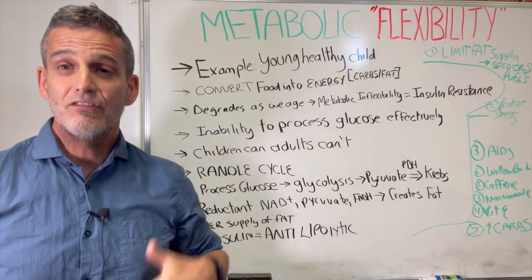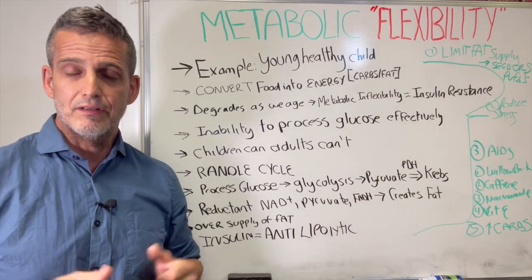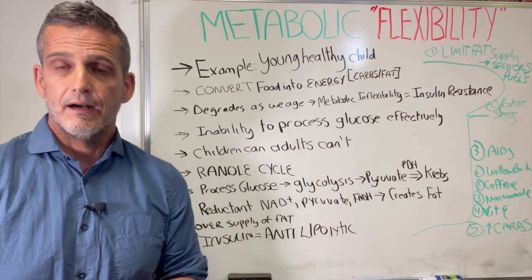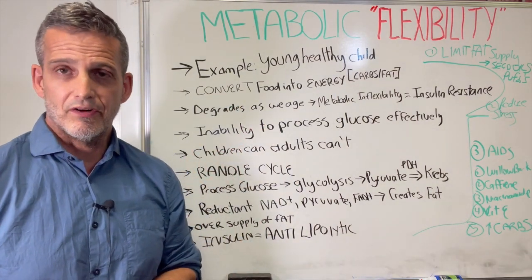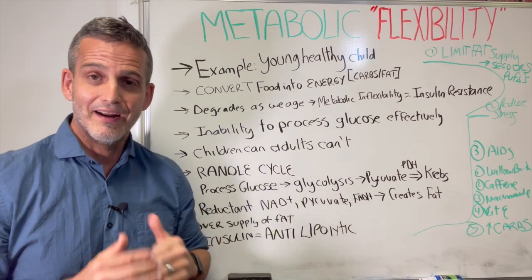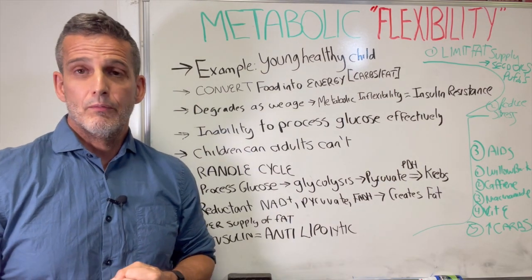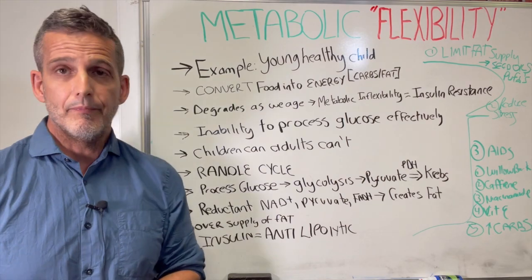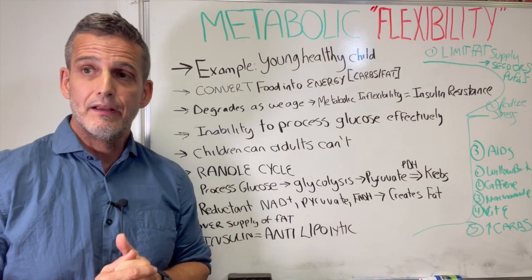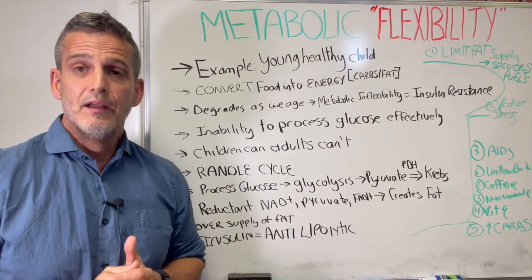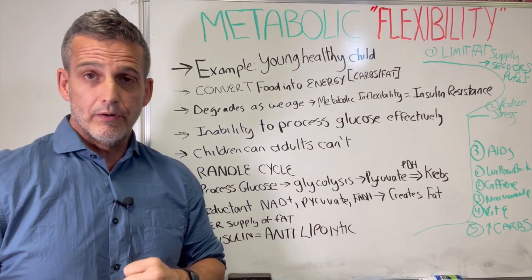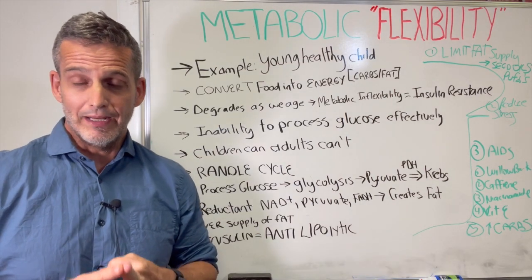The fifth step — believe it or not — is actually getting more carbs that can be easily converted into energy. This means avoiding resistant starches like green bananas and undercooked foods. We used to think resistant starches were good because they don't spike glucose or insulin, but they feed endotoxins, creating more inflammation and paradoxically raising cortisol. Instead, think fruits, honey, white rice, and well-cooked potatoes — carbs that convert into energy efficiently — as long as you're not in too large a caloric deficit, which increases the demand for lipolysis.